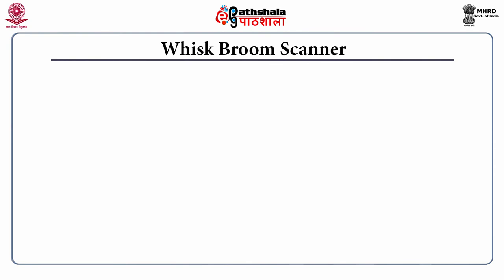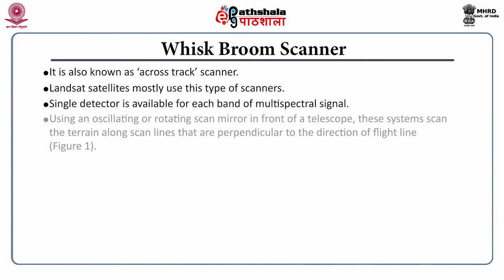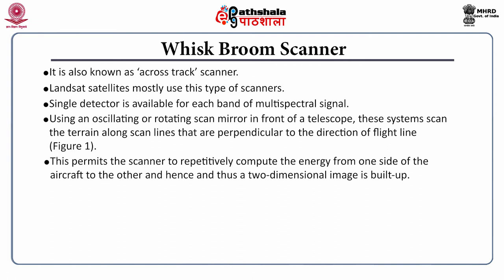The whisk broom scanner is also called the across-track scanner, and the best example is the Landsat satellite. In this type, a single detector is available for each band of the multispectral signal, using an oscillating or rotating scan mirror in front of a telescope. These systems scan the terrain along scan lines that are perpendicular to the direction of flight, and such a scanner permits repetitive sensing of energy from one side of the aircraft to the other, building up a two-dimensional image.